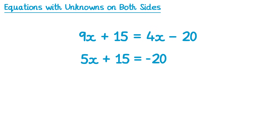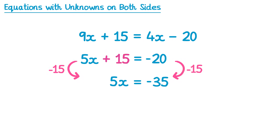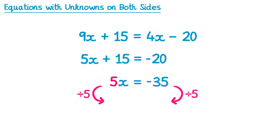Now we continue solving the two-step equation in the usual way. Because of this plus 15, we'll subtract 15 from both sides. On the left-hand side the 15s will cancel, so we have 5x. And on the right-hand side, negative 20 subtract 15 is negative 35. Then because of this 5, we divide both sides by 5. On the left-hand side, 5x divided by 5 is 1x, and on the right-hand side, negative 35 divided by 5 is negative 7. So that's the solution to this equation.